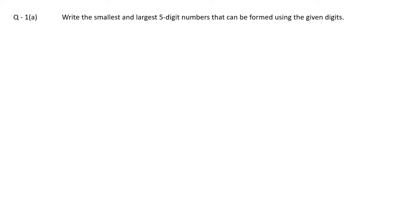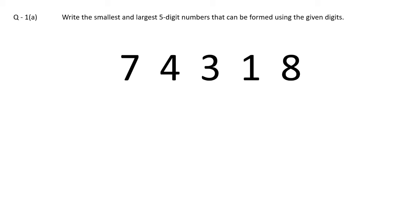First question, part A, is saying: write the smallest and largest five-digit numbers that can be formed using the given digits. The digits given are 7, 4, 3, 1, and 8. To make the smallest number, we have to pick the smallest digit first — that is 1, then 3, then 4, then 7, then 8. So the smallest five-digit number formed is 13,478.